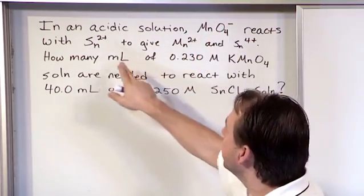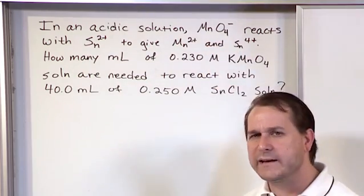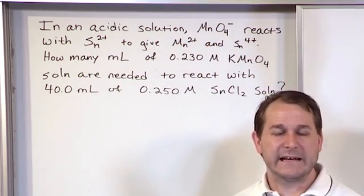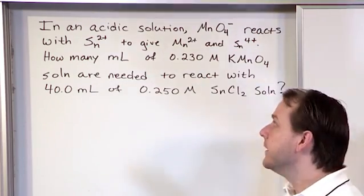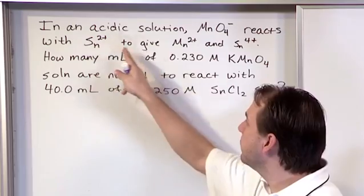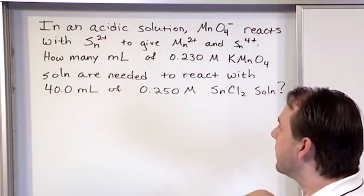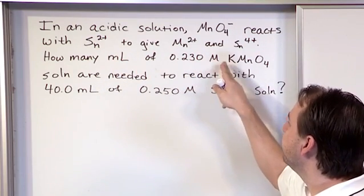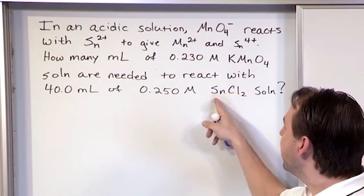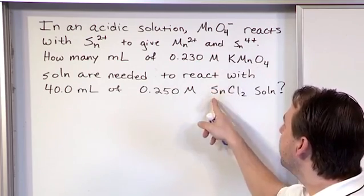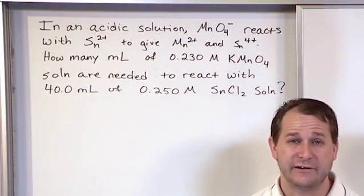Then it's telling us that this ion reacts with this ion to give this ion and this ion. So it's telling us basically the net ionic equation. It's telling us all the ions that are involved in this reaction. And then the second part of the problem is asking us how many milliliters of a certain solution. Notice we have potassium permanganate here. Notice we have tin chloride here. But there's no potassium or tin mentioned in any of the top part of the problem. And I mentioned this before. That confuses a lot of students.